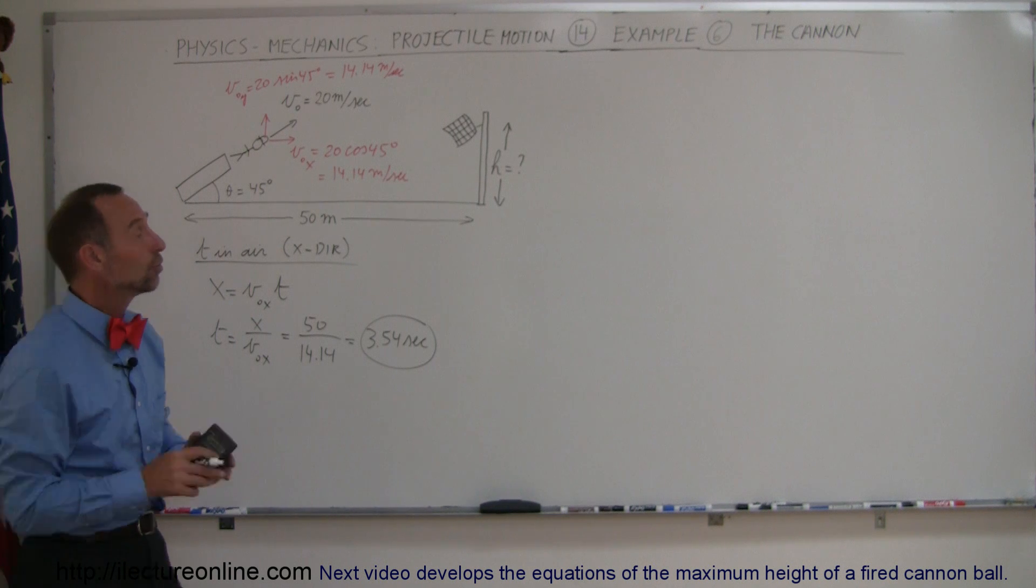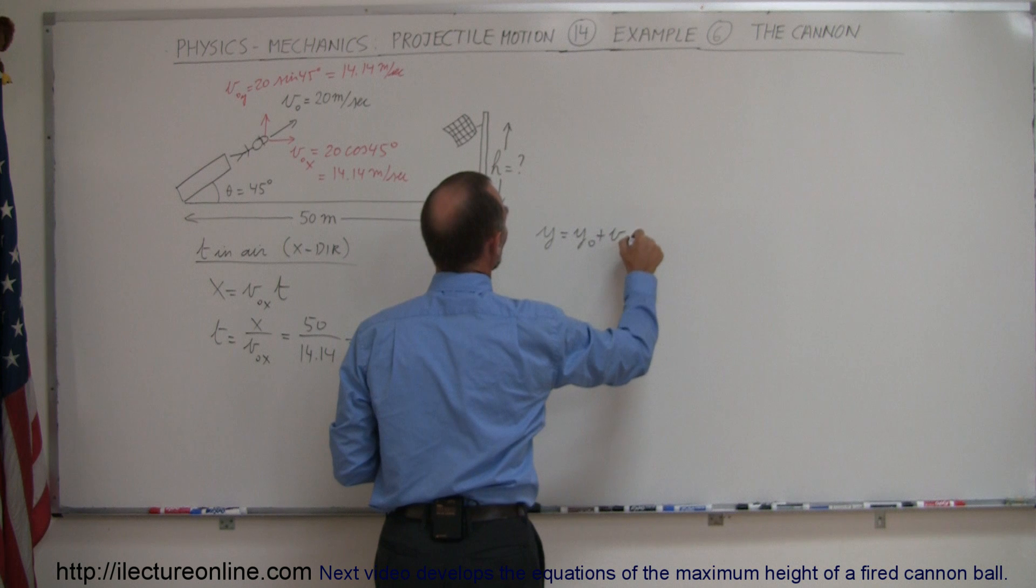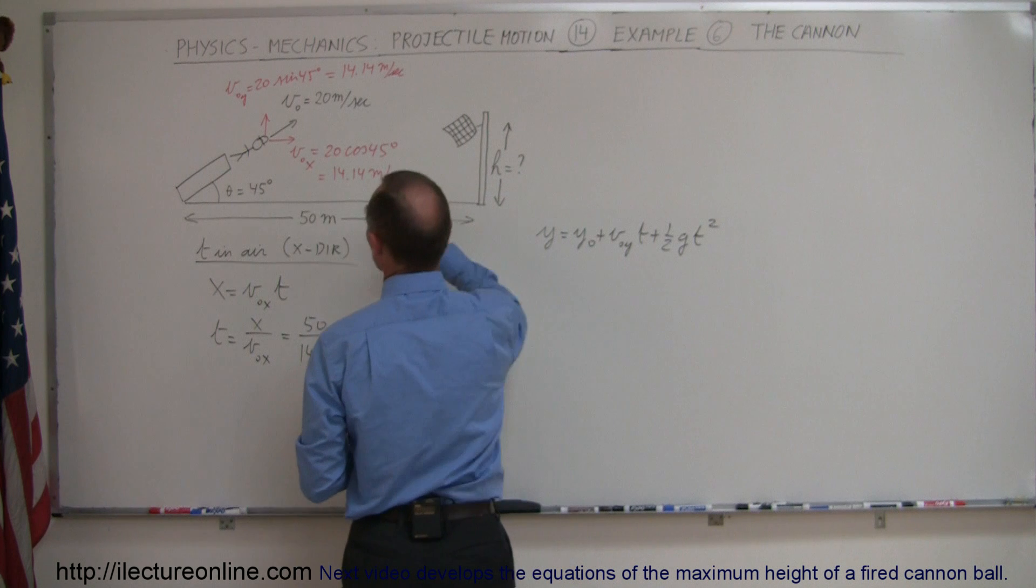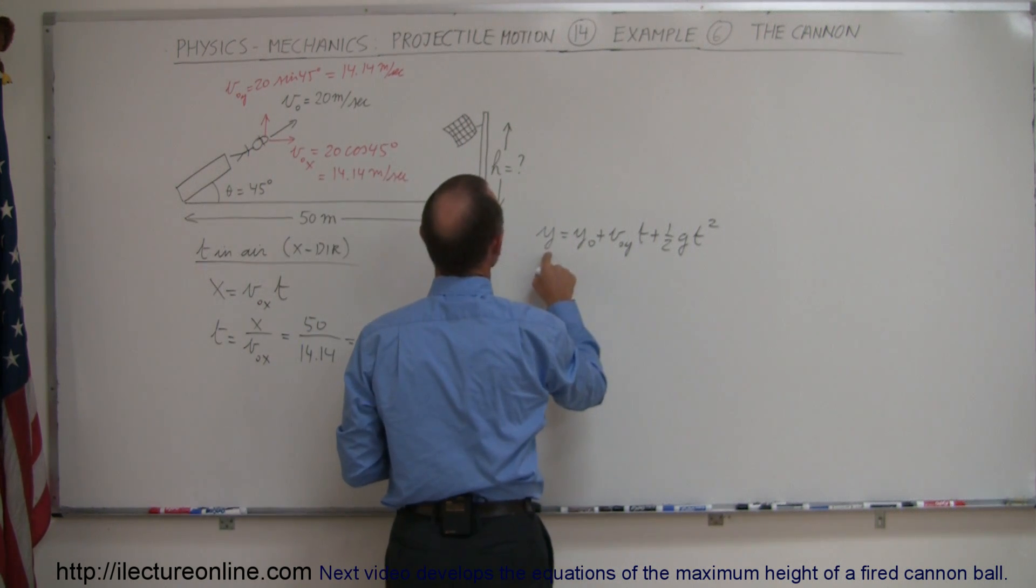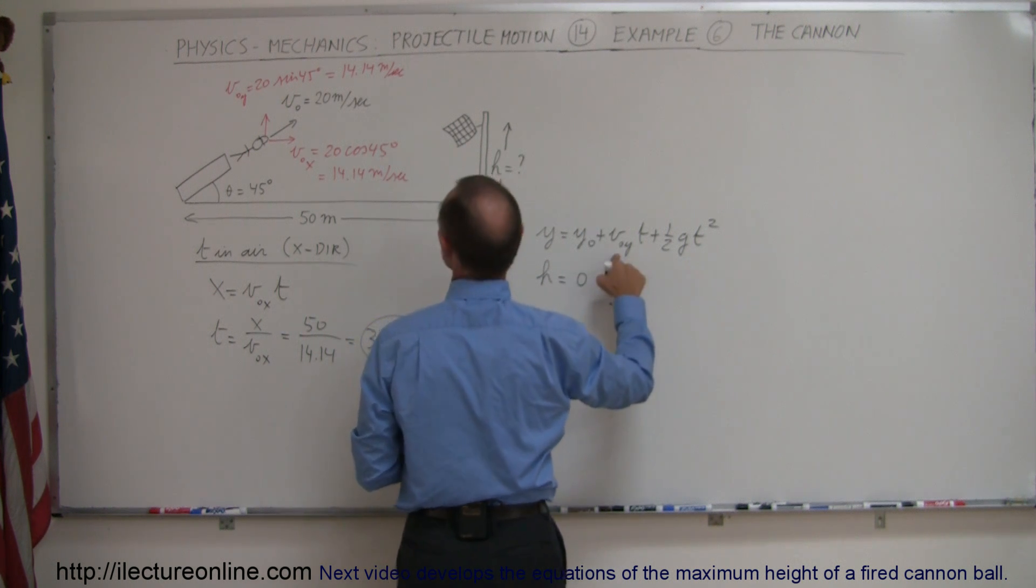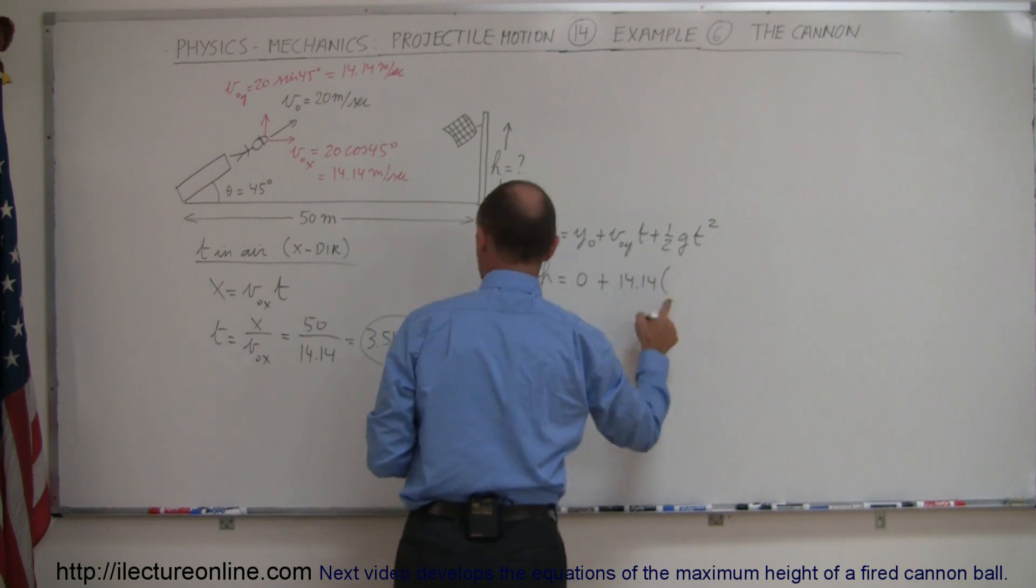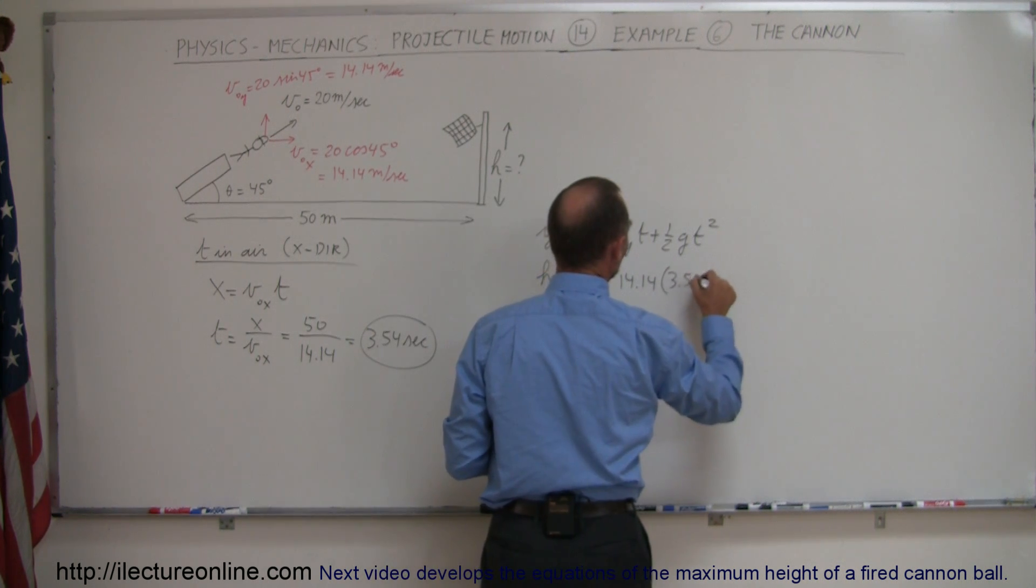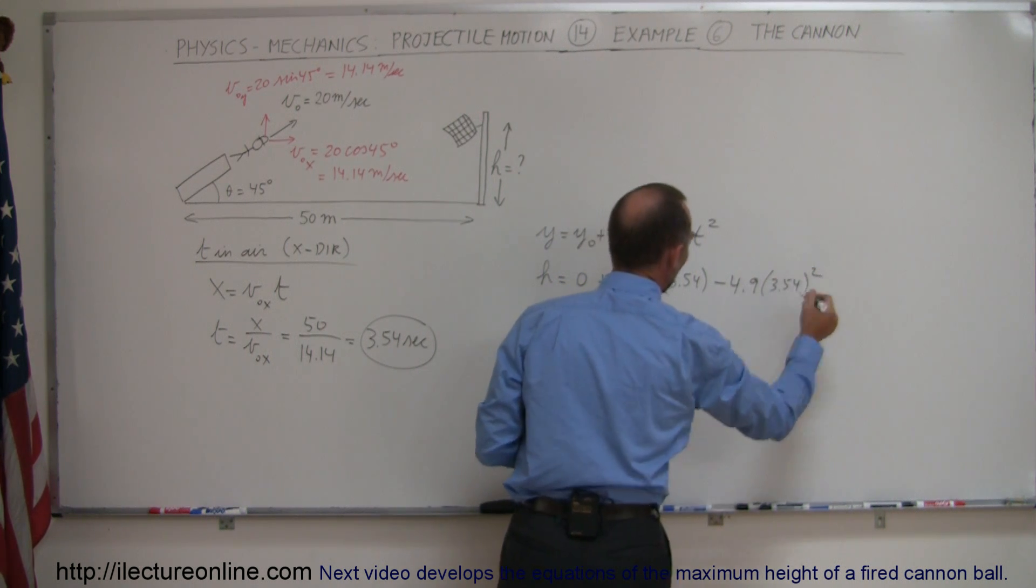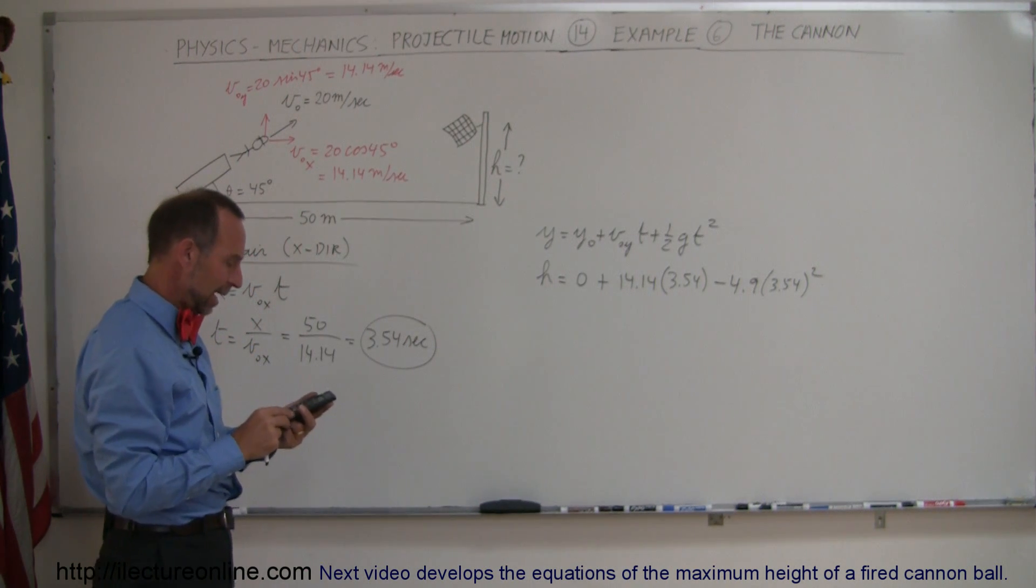And of course to find the height we use the equation, y is equal to y initial plus v initial in the y direction times time plus one-half g t squared. Realizing we start at the ground level and realizing that the final height is h, we can say h is equal to zero plus v initial in the y direction which would be 14.14. The time is known, we calculated it to be 3.54 minus 4.9 times 3.54 squared. So here you can see that we just have to plug in the time in that equation, and we find out what the height is.